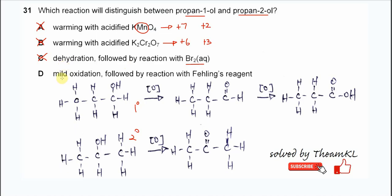So the answer is D. Mild oxidation followed by reaction with Fehling's reagent. If it's mild oxidation, the alcohol will oxidize to other products. For example, propan-1-ol will oxidize to aldehyde. Hydrogen is removed and this one removed, then it will form this aldehyde.